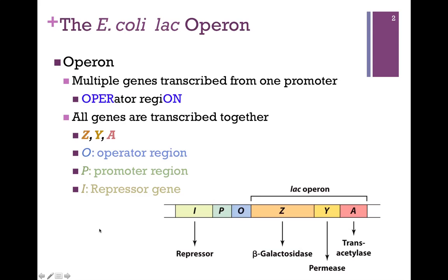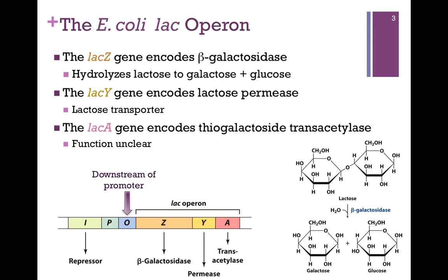Upstream of the structural genes is an operator region shown in blue. Upstream of that is the promoter region in green — this is the region of DNA to which RNA polymerase binds to transcribe the operon. Upstream of the promoter region is LAC-I, the gene that encodes the LAC repressor.